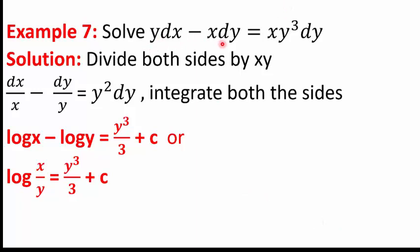In question 7, we solve Y dX − X dY = XY³ dY. Dividing both sides by XY: dX/X − dY/Y = Y² dY. There are no Y terms on the left and no X terms on the right. Integrating: log X − log Y = Y³/3 + C, which can also be written as log(X/Y) = Y³/3 + C.